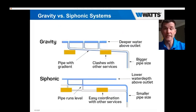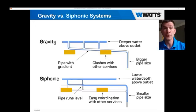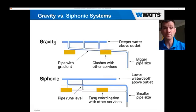Here are the two systems side by side. With a gravity system, you have a deeper water level or ponding on top of the roof compared to the siphonic. The difference with gravity is that to get everything down, you need to slope the piping through the system. This slope changes the angle of the piping through the building, making it more difficult from an engineering and installation standpoint to get around other services — other piping, vent work, and so forth.